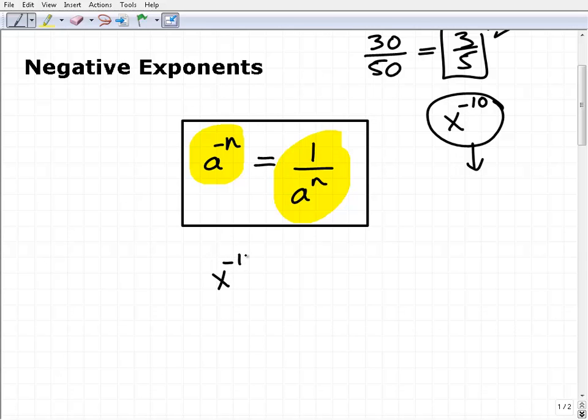If I have x to the negative 10, to rewrite that, just look at the pattern here. I have a base to the negative exponent. The rule says just write it as 1 over that power, but the negative exponent goes away.